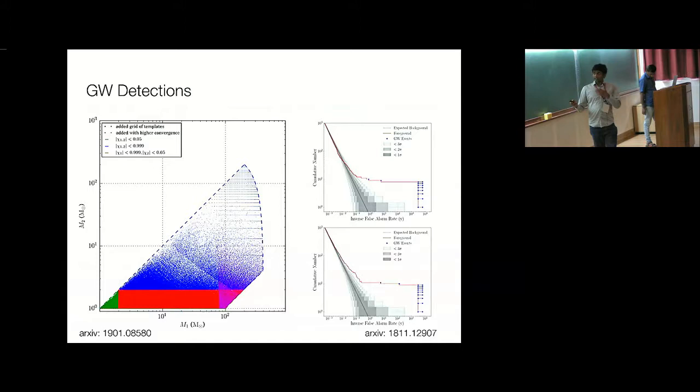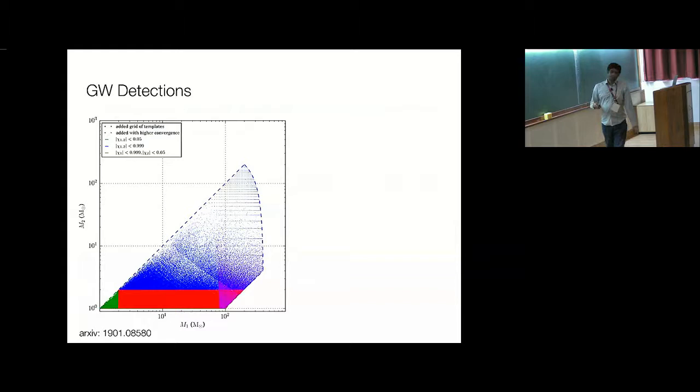The search procedure consists of running all these templates over the data and getting these background distributions that Satya showed. This is the number as a function of the false alarm rate, and then you set a particular threshold in terms of false alarm rate for calling something a candidate, which was decided to be one in 30 days, something that happens one in 30 days over the entire bank. The second thing is that since you have a significant number of events that you have already seen, you have some idea about the population of the events. So you have a quantity called P-Astro which roughly quantifies the chance that it comes from the same population.